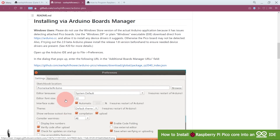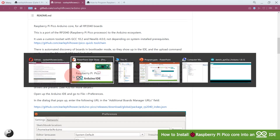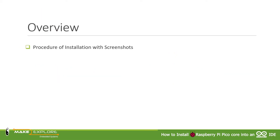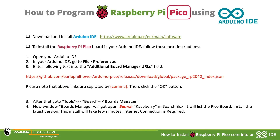So this is the procedure, and we will see it in detail. In this video we will see the procedure of installation with screenshots, then a demonstration of this core installation on an actual system, and then we will see the LED fading program using this Arduino IDE with the installed core.